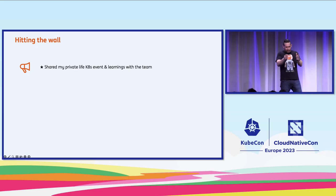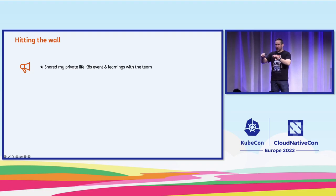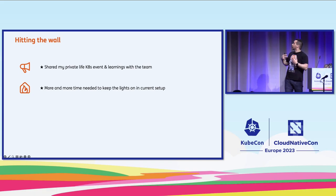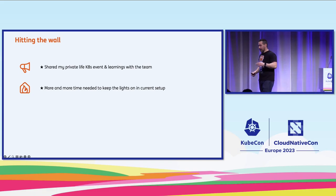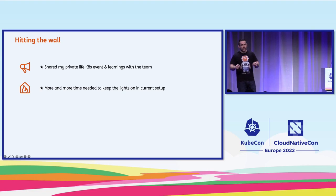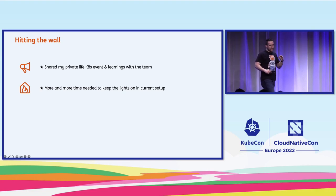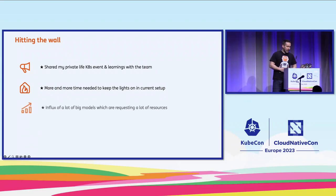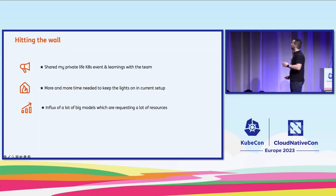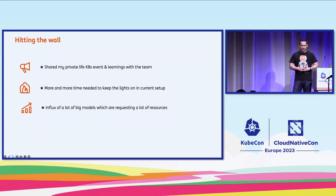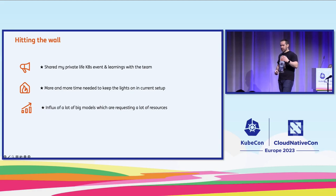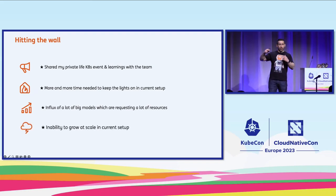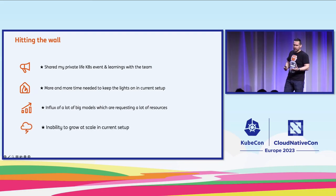Meanwhile the platform was growing, and more and more time was needed to keep the lights on in the old setup — to the point that new tenant features were not getting developed because of how much time it took to maintain everything. Then we had an influx of a lot of big models that requested significant hardware resources and engineering effort, and that's when we hit our old nemesis: the inability to grow in the current setup.